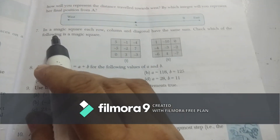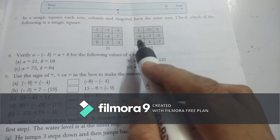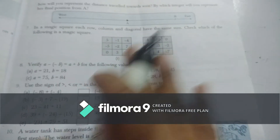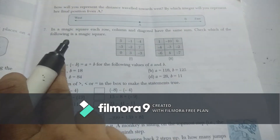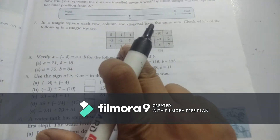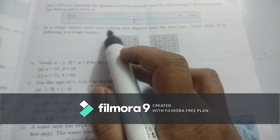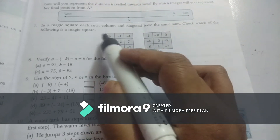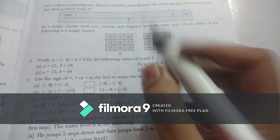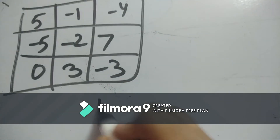Question 7: In a magic square, each row, each column, and each diagonal must have the same sum. We have to check which of the following is a magic square by verifying that all rows, columns, and diagonals give the same sum.